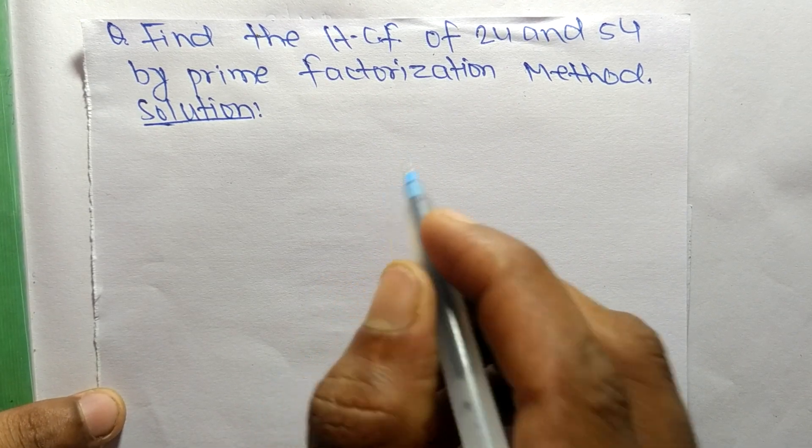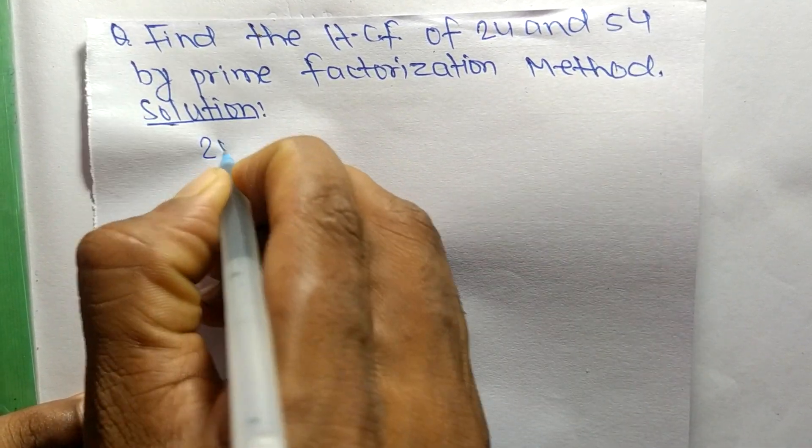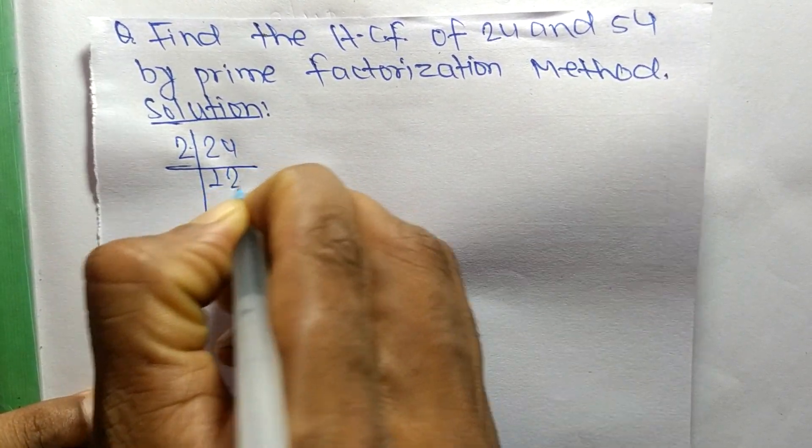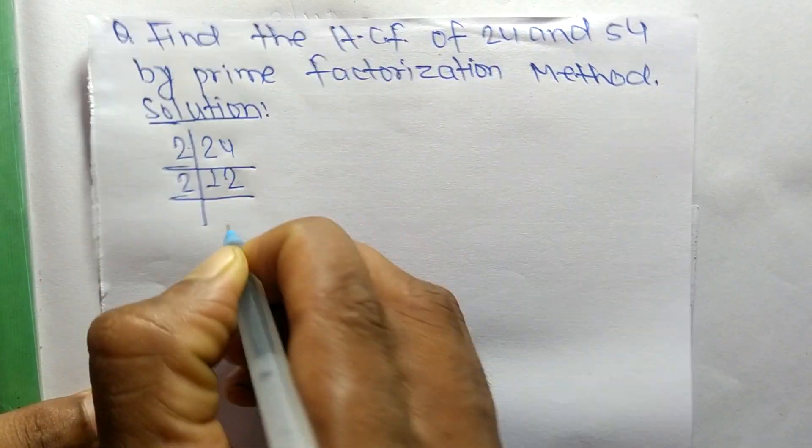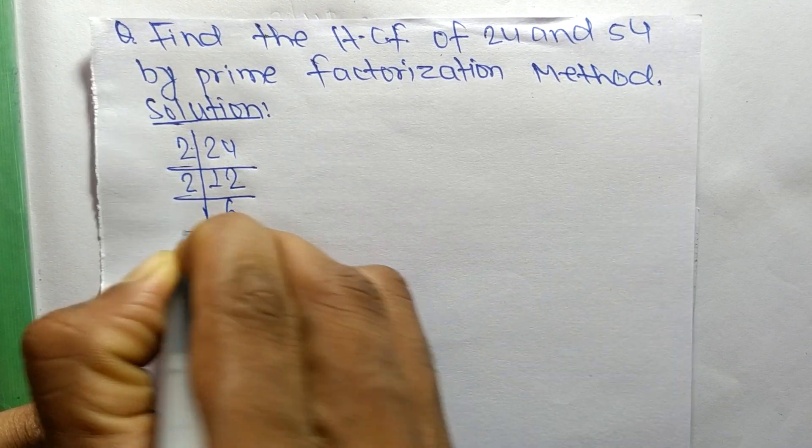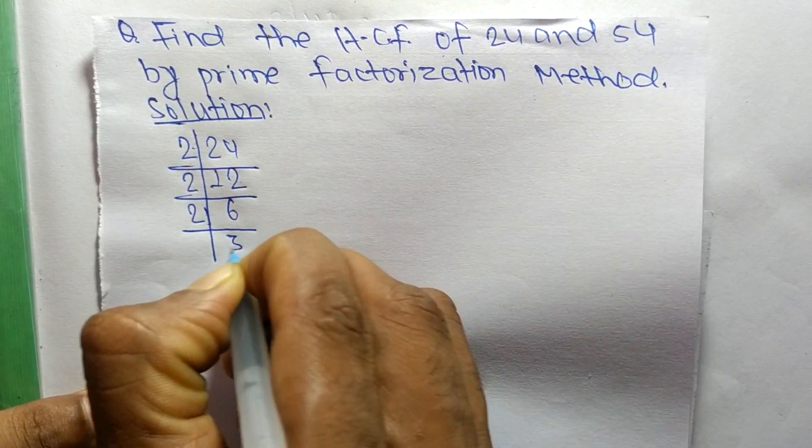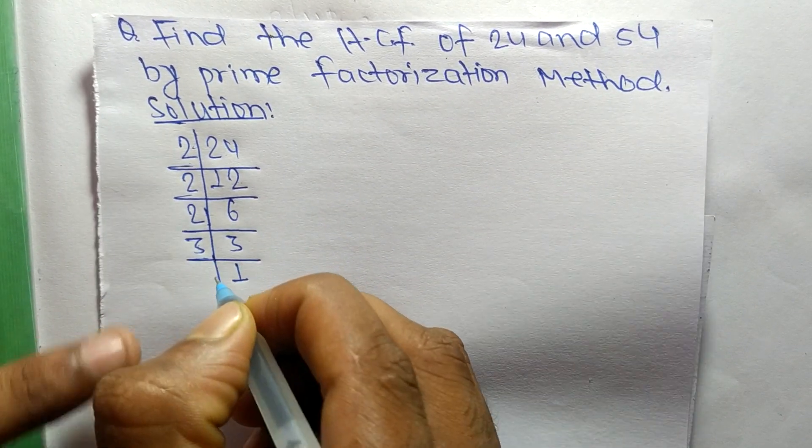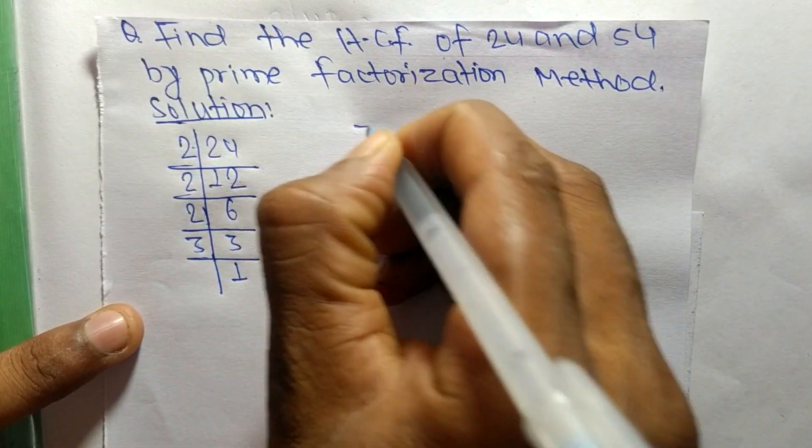So first we find out the prime factors of 24. So it is 2 times 12 means 24, 2 times 6 means 12, 2 times 3 means 6, and 3 times 1 means 3. These are the prime factors.